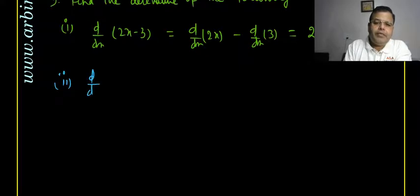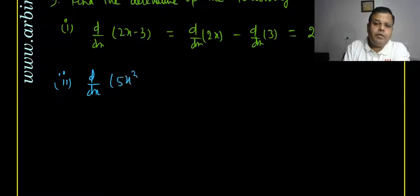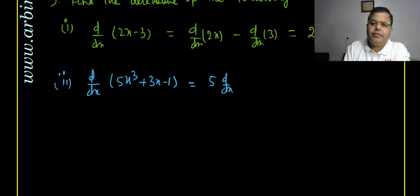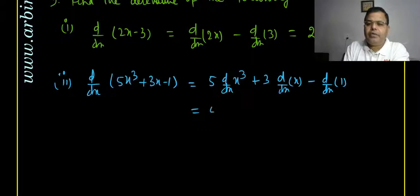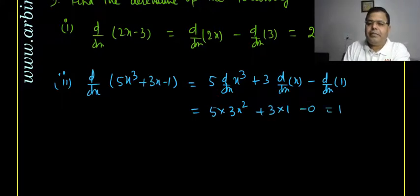The second part of question nine is d/dx of (5x³ + 3x − 1). Taking constants out: 5 · d/dx(x³) + 3 · d/dx(x) − d/dx(1) = 5 · 3x² + 3 · 1 − 0 = 15x² + 3. That is the answer.